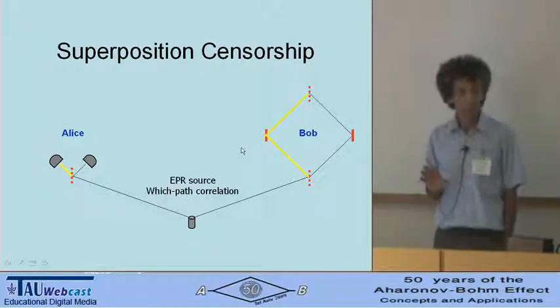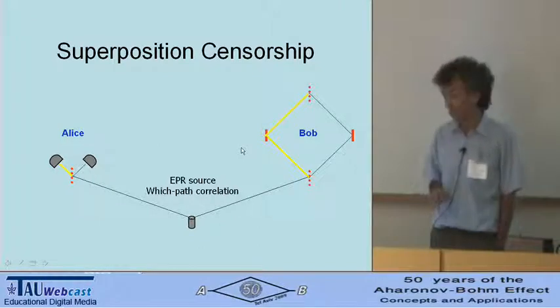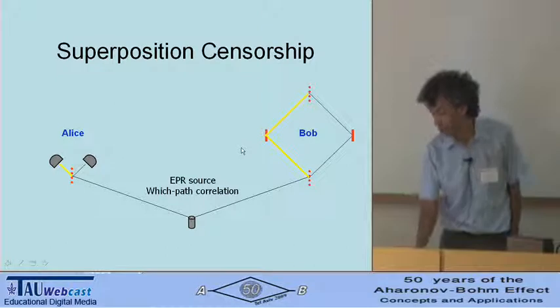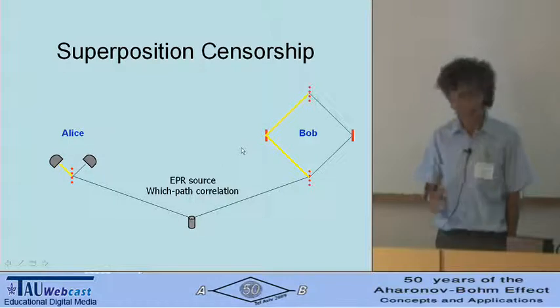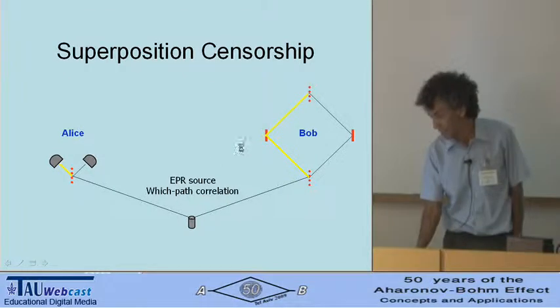That is, whatever Bob is doing, he will not be capable of knowing whether Alice chose to make a measurement and what kind of measurement she made. So it is this censorship that guards causality in this case and does not allow any signal.